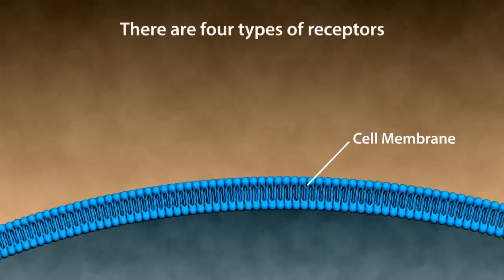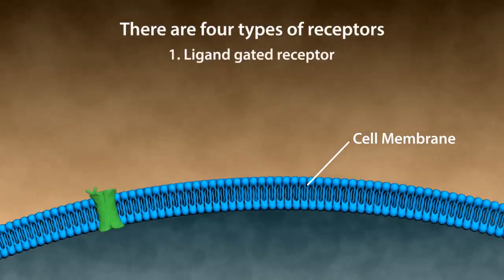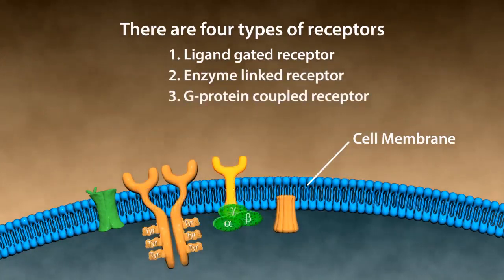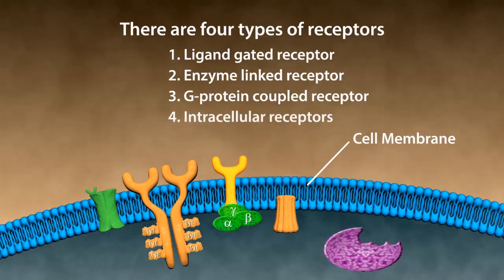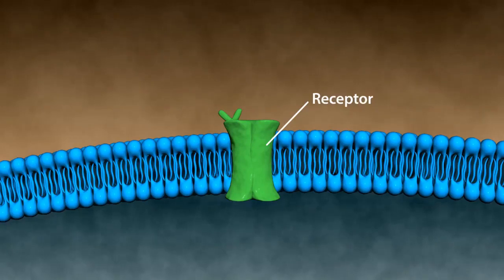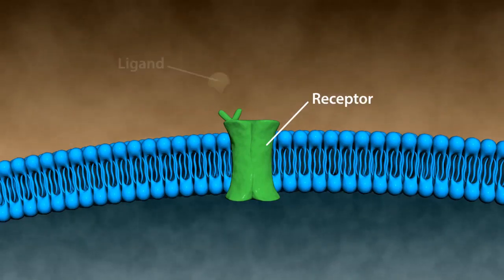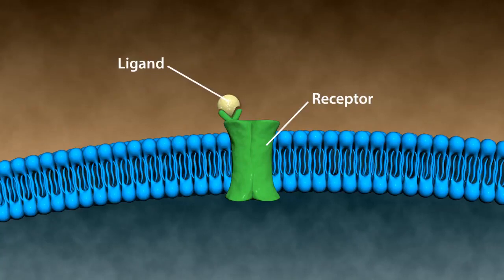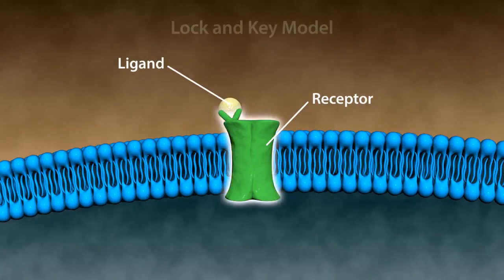There are four types of receptors: ligand-gated receptor, enzyme-linked receptor, G-protein-coupled receptor, and intracellular receptors. Receptors have a specific site to bind to molecules or ligand. This is called a lock and key model.